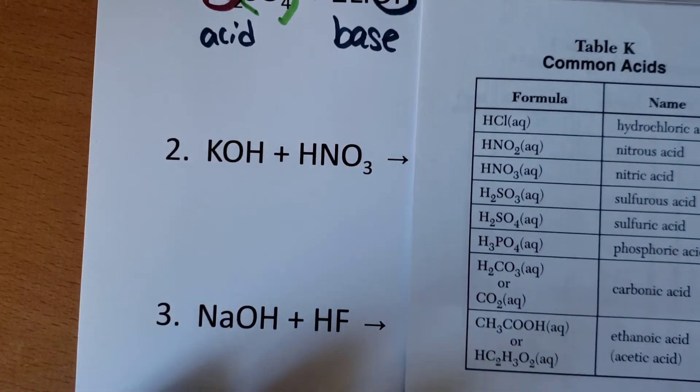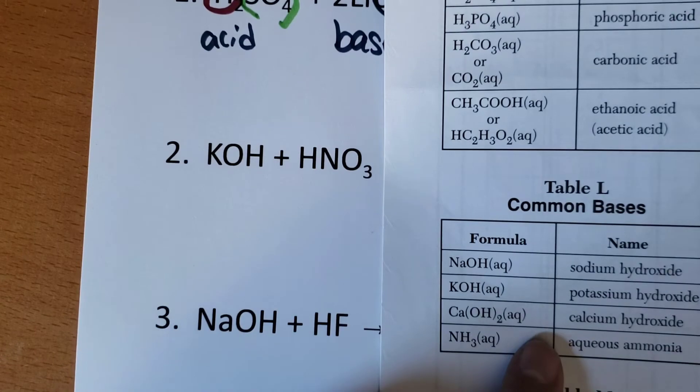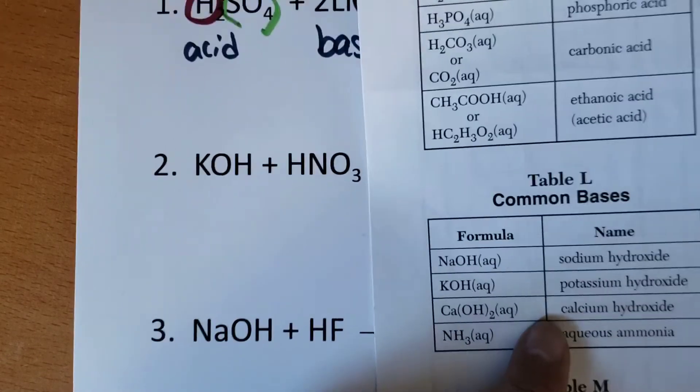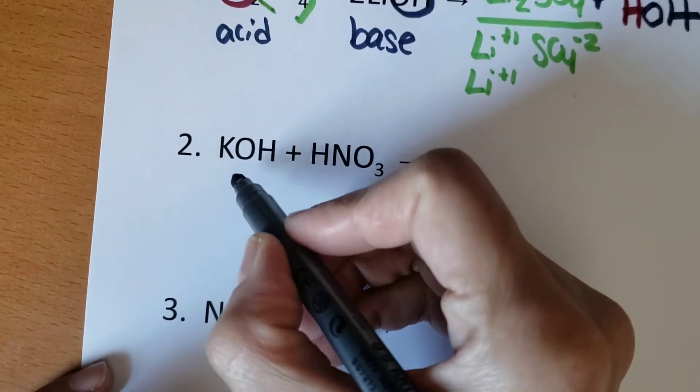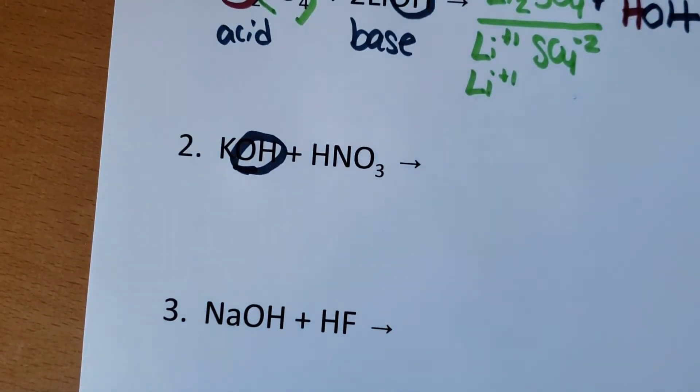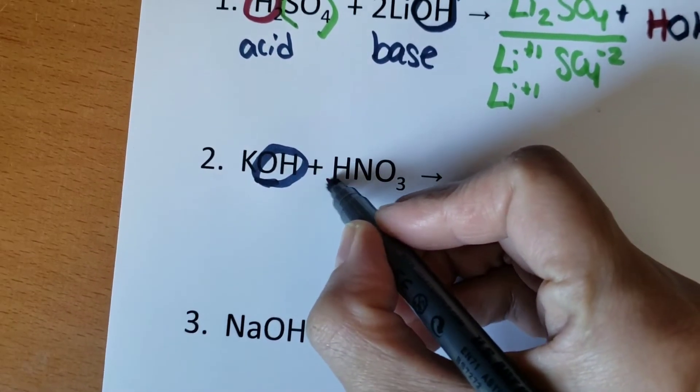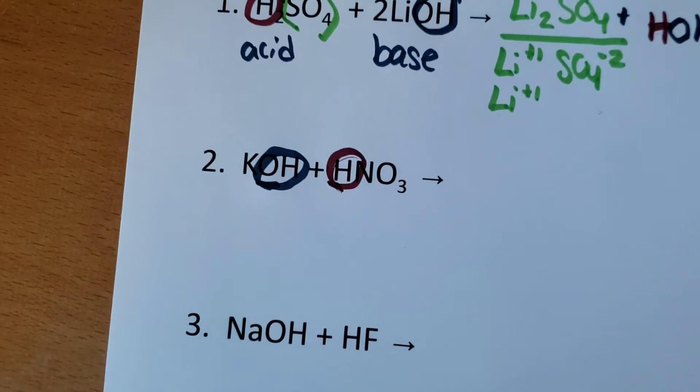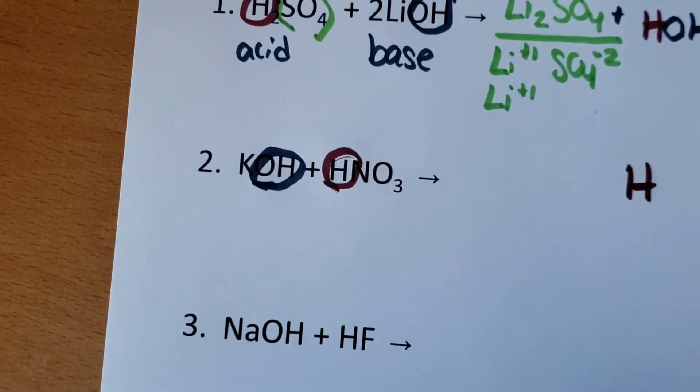Here we have reference table K and reference table L. So I see my base is potassium hydroxide. So the hydroxide from the base will combine with my hydrogen from my acid. And they're going to make water as a product. So that's HOH.